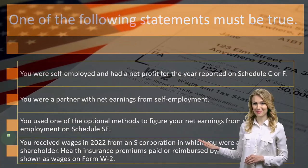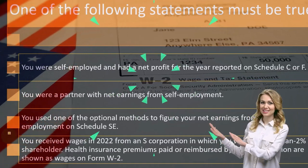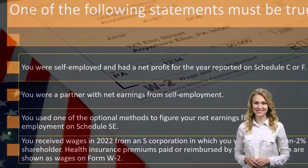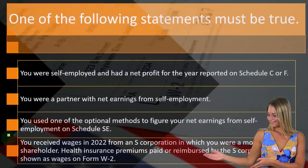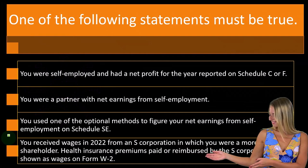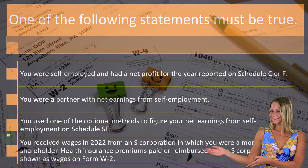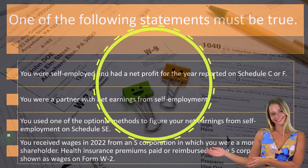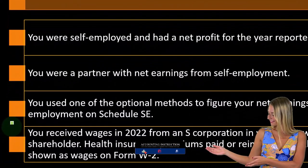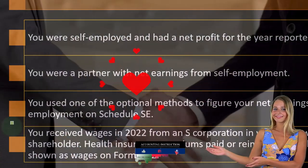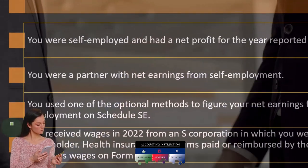If you're a sole proprietorship and you're growing, you might expand by becoming a partnership, which means two or more people. You'd have to report earnings on a separate form that flows into your 1040, but you're still subject to self-employment tax. You might also set up an LLC, which is structured similarly to a partnership, so you'd be in a similar situation there.